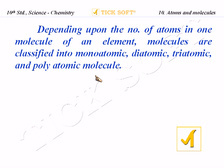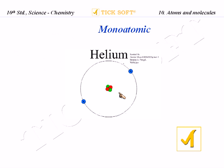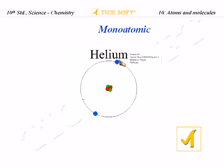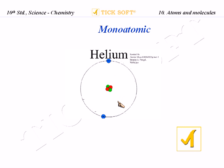Let us look at examples one by one. For monoatomic, the best example is helium. Helium exists freely as a single atom, so the helium molecule has only one helium atom. It consists of two electrons revolving around the nucleus, and inside the nucleus we have two protons and two neutrons.